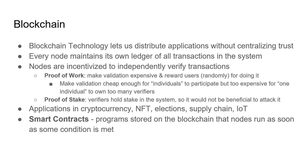Bitcoin and other proof-of-work blockchains do this by making the validation process expensive to some degree. Nodes have to solve computational puzzles in addition to verifying blocks to be compensated for doing this work, but the idea is that the cost to solve these puzzles is cheap enough for honest participants but prohibitively expensive for a Sybil attack, where nodes fake multiple identities.